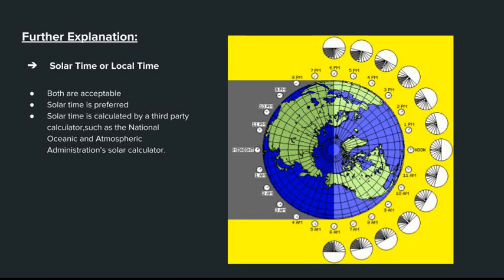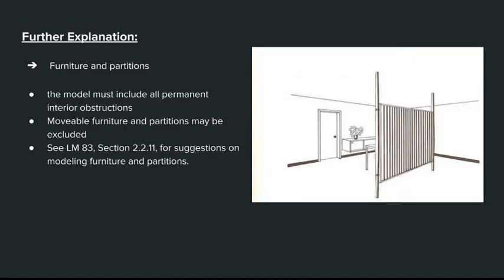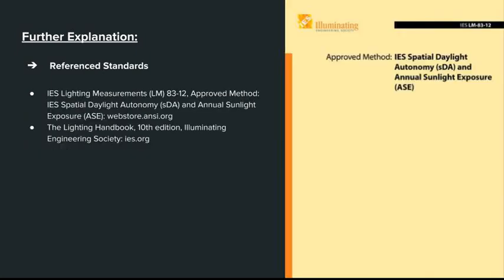When performing daylight measurements, determine whether the measurements will be taken at solar or local time. Both are acceptable, but solar time may be more appropriate because it is based on the position of the sun in the sky. IES LM83-12 provides general guidance for interior surface reflectance. If surface reflectance values are not available in manufacturers' information, field measurements may be performed. The model must include all permanent interior obstructions; moveable furniture and partitions may be excluded. The IES Lighting Measurements LM83-12 approved method — IES Spatial Daylight Autonomy and Annual Sunlight Exposure — is used as a reference for daylighting calculations.